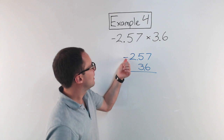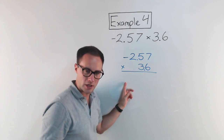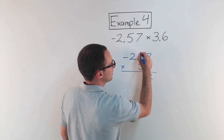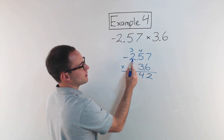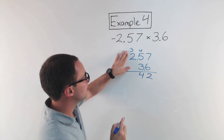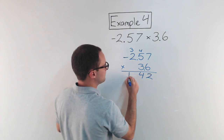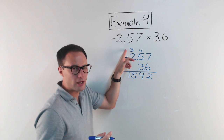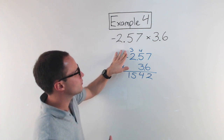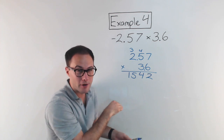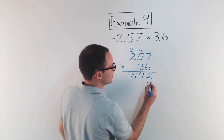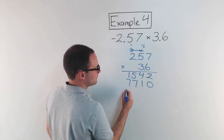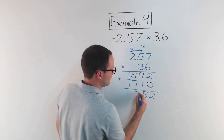Now we're just going to multiply. I know negative times positive gives a negative, so I just need to remember a negative at the end. Seven times six is forty-two — carry the four. Thirty plus four is thirty-four — carry the three. Six times two is twelve, plus three is fifteen. Then I add a zero, and three times seven is twenty-one — carry the two — then fifteen, sixteen, seventeen. Adding everything up: two, five, twelve, nine.